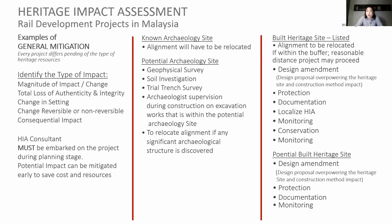For built heritage sites — both listed and potential — if it's listed and the alignment comes right to the doorway, the alignment will also have to be relocated. If the HIA is carried out early, there can be coordination with the designer to interface with the design. Railway station design can be quite large, as I showed. We also have to look at the design from a conservation principle perspective: whether the design will be in harmony with the heritage, or whether it will be totally extreme — it's one or the other. The protection of the site during construction must also be ensured, and documentation is a very important tool.